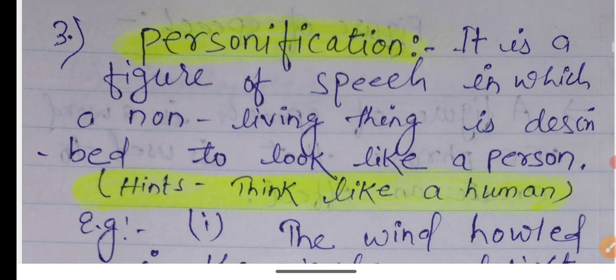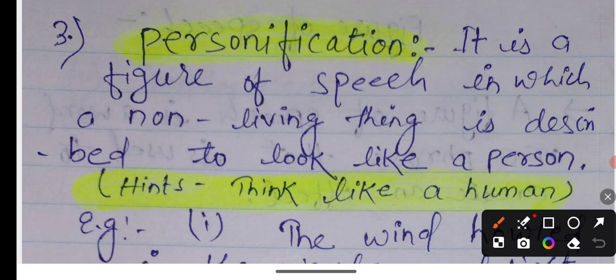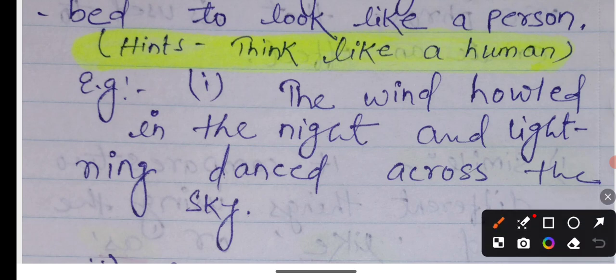Personification. What is personification? It is a figure of speech in which a non-living thing is described to look like a person. When we compare non-living things with human beings, it will be personification. The hint is: it thinks like a human. For example, the wind howled in the night, and lightning danced across the sky. The wind howls and screams like humans do, and lightning dances.